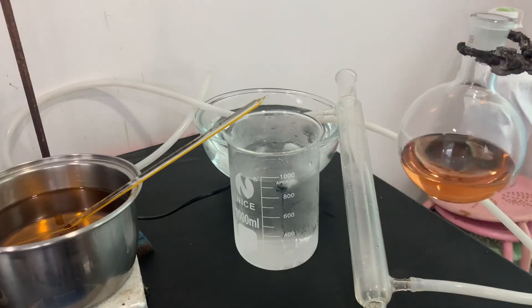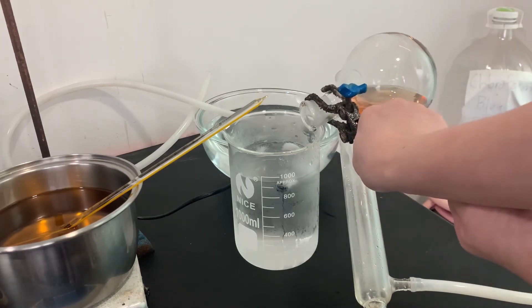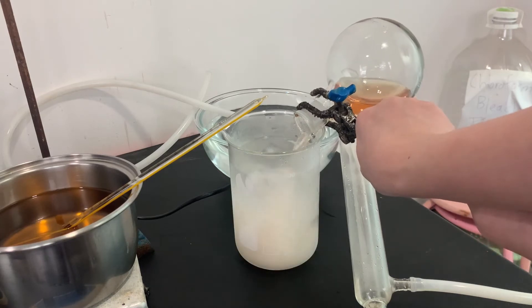After the reflux, I poured the contents of the flask into 1 liter of cold water while it is still hot. This will immediately precipitate out the acetanilide.